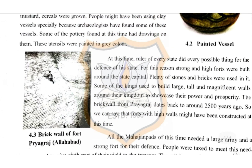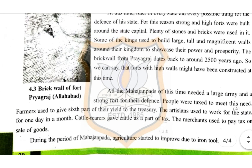At this time, the ruler of every state did everything possible for the defense of his state. For this reason, strong and high forts were built around the state capital. Plenty of stones and bricks were used in construction. Some kings used to build large, tall, and magnificent walls around their kingdoms to showcase their power and prosperity.